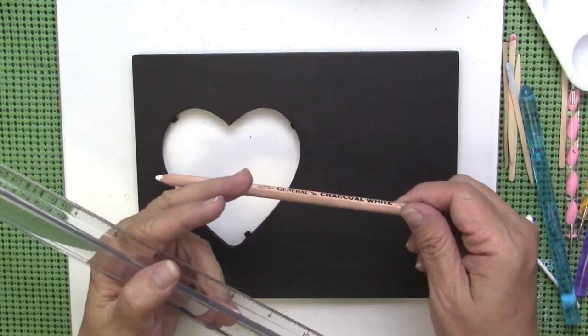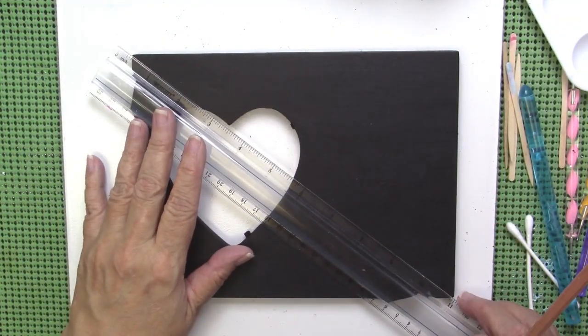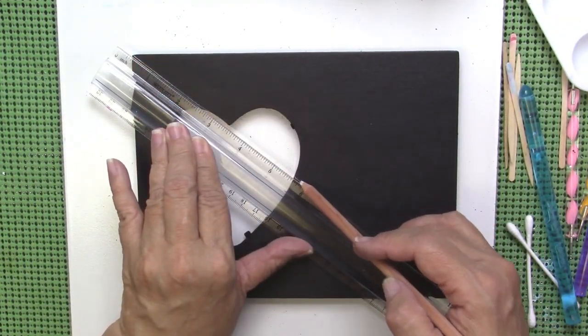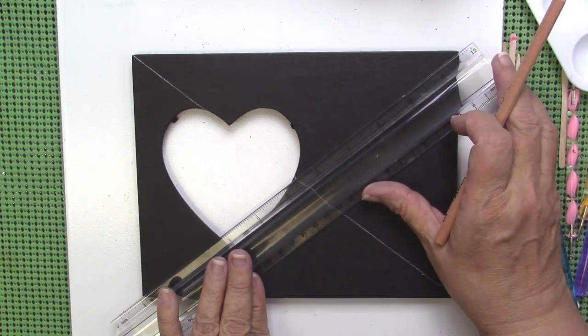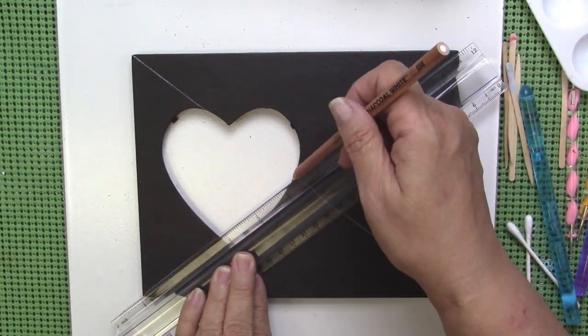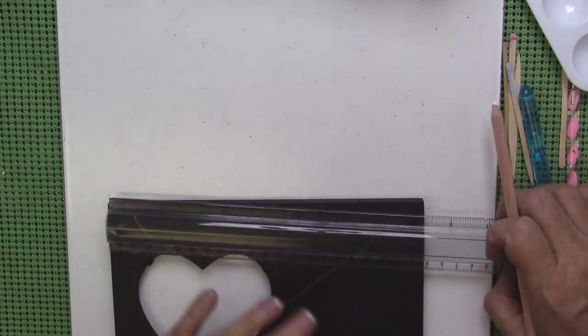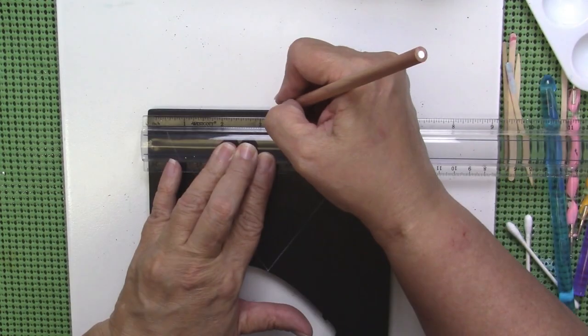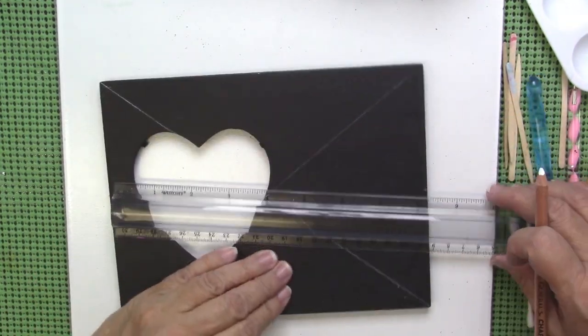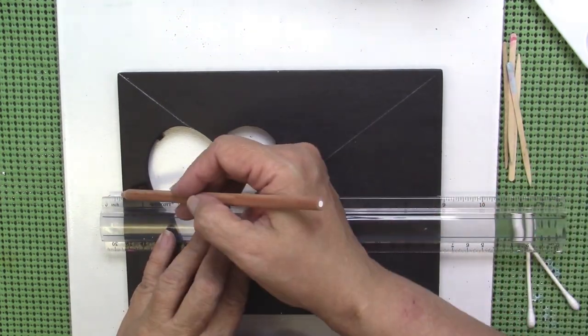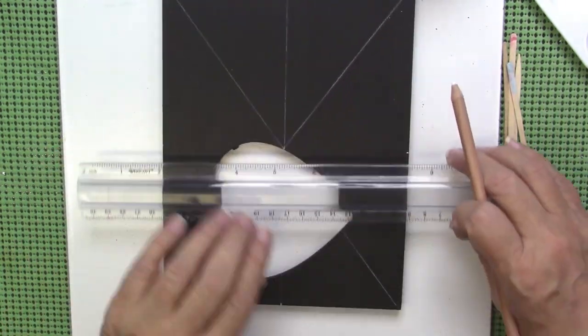Now I'm drawing with my general chalk pencil and just a ruler. I'm drawing the grid and I go from corner to corner and then from the center of each side of this frame and connect all of those dots. You'll see that it gives me the center of the piece and some grid lines to work with.